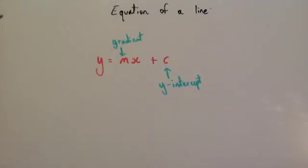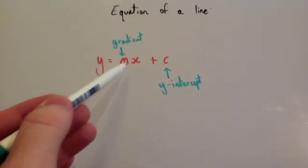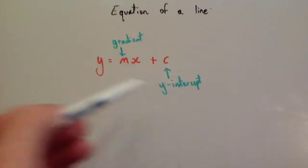In this video we're going to look at the equation of a line. The equation of a line at GCSE level is given as y equals mx plus c, where m stands for the gradient and c stands for the y-intercept.